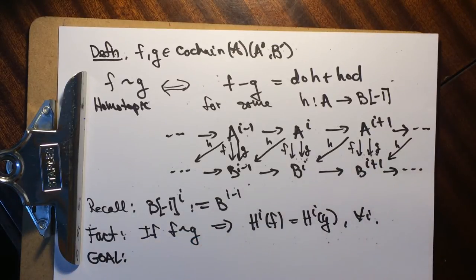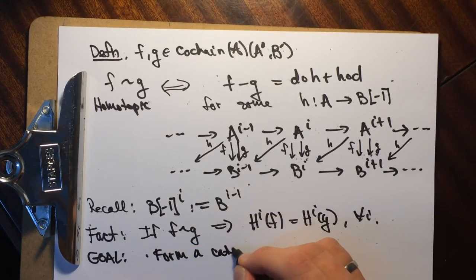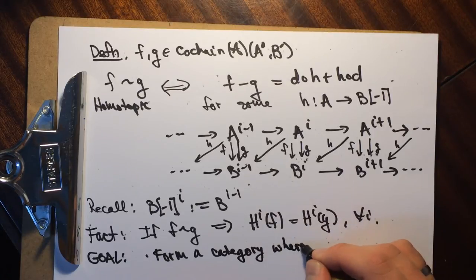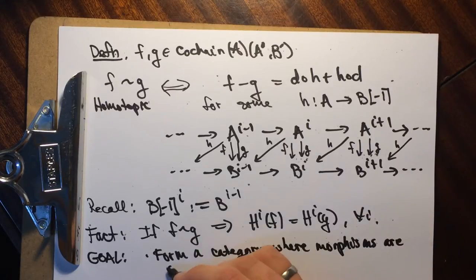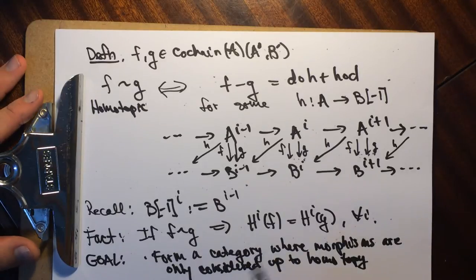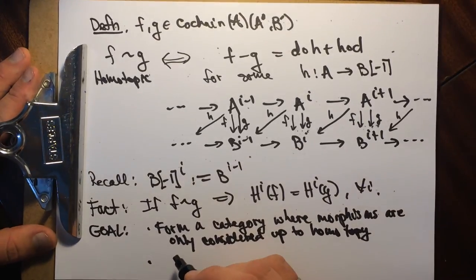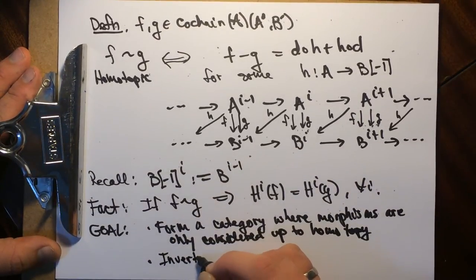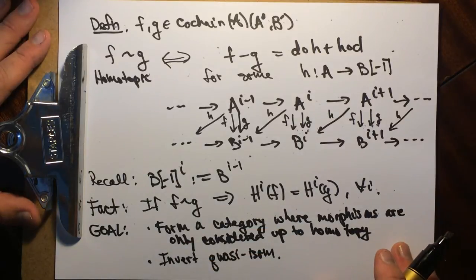Our goal will be to form a category where morphisms are only considered up to homotopy — this will be the homotopy category. And then the other thing we need to do is invert the quasi-isomorphisms, which are the maps that induce isomorphisms on cohomology.